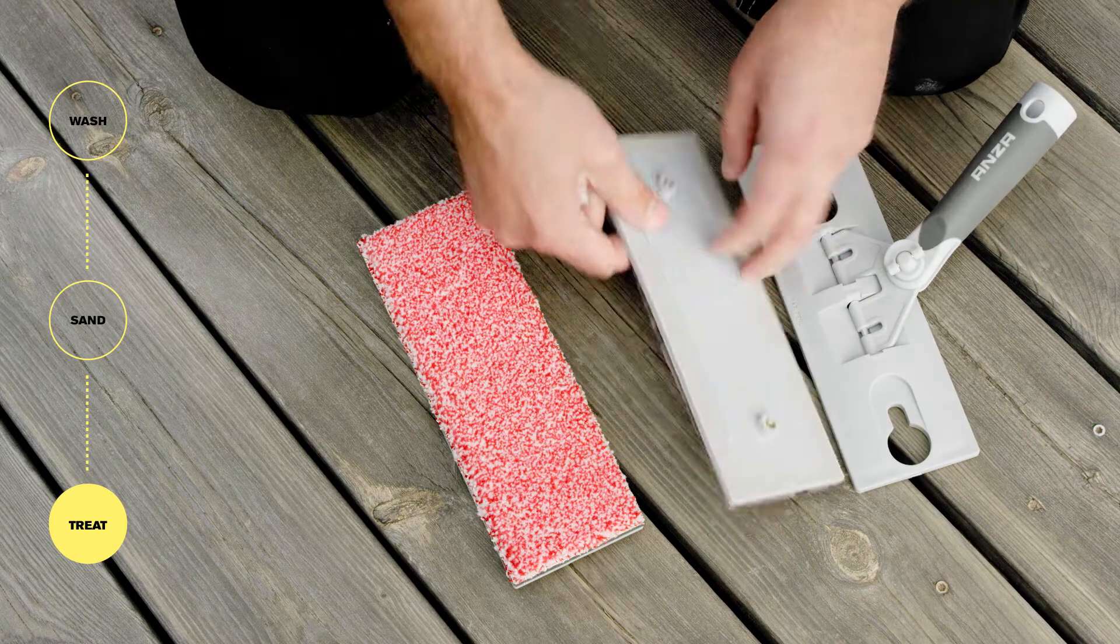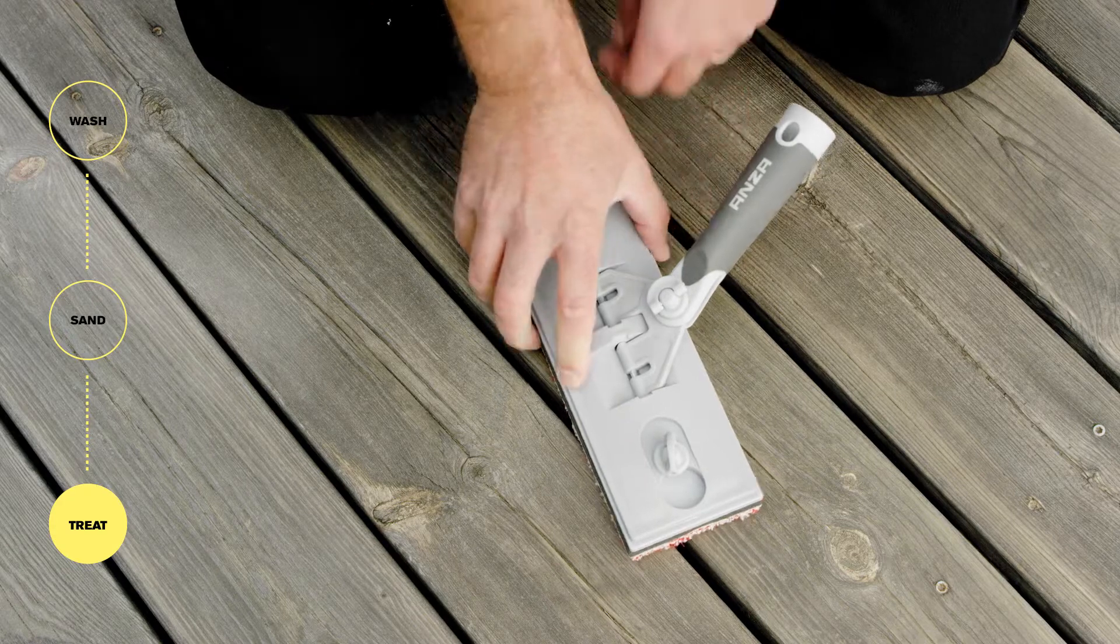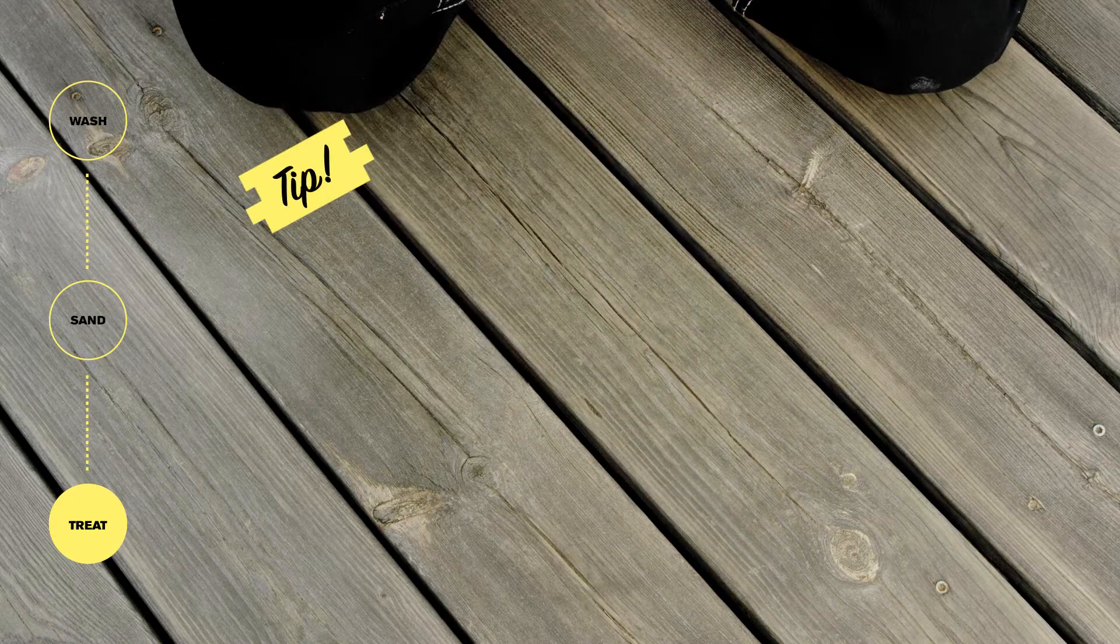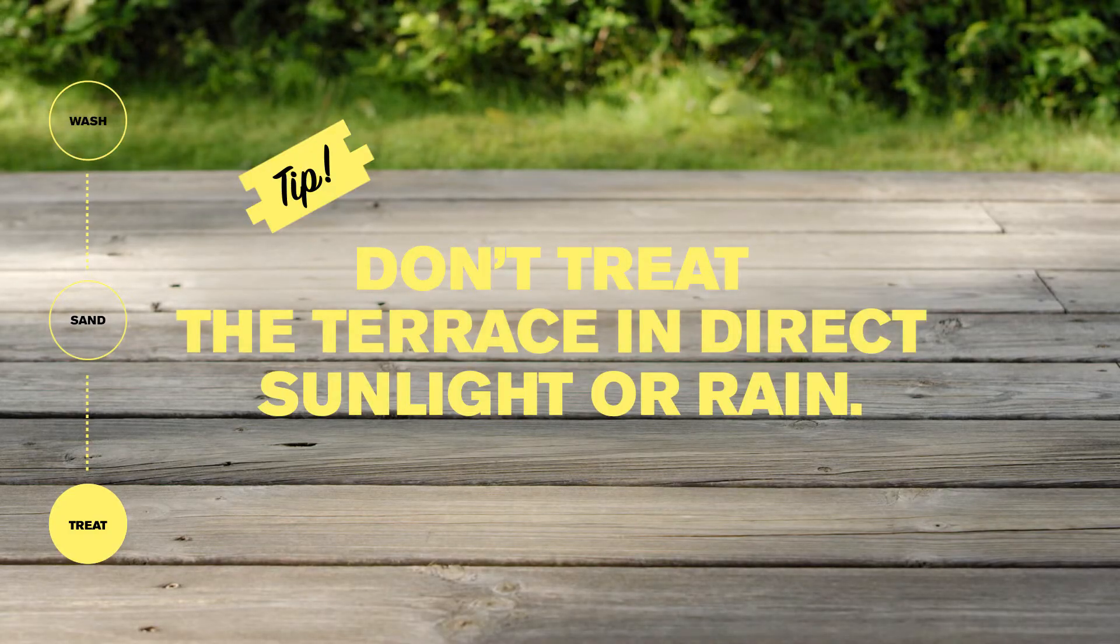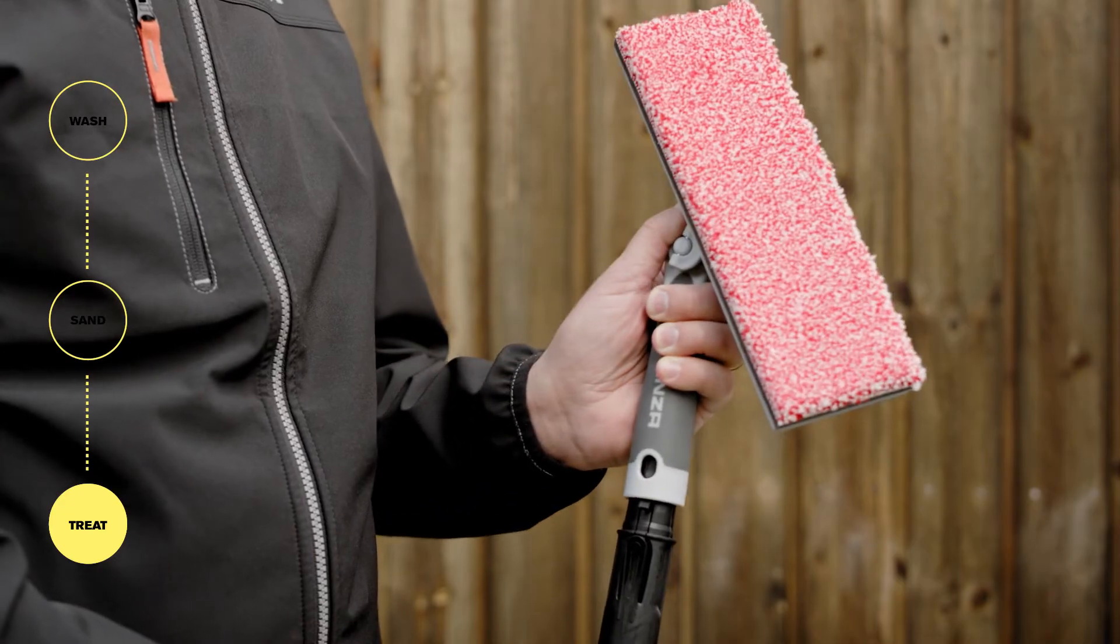Remove the sanding tool and attach the applicator pad onto the terrace tool. Don't treat your terrace in direct sunlight or when it's raining. The wood needs to be dry and cool.